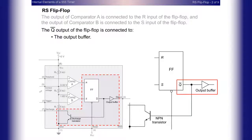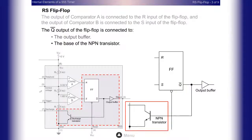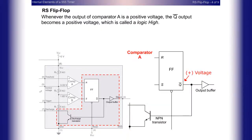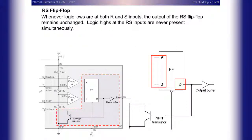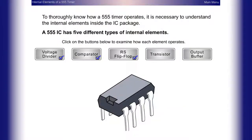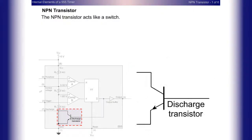The Q output of the flip-flop is connected to the output buffer and the base of the NPN transistor. Whenever the output of comparator A is a positive voltage, the Q output becomes a positive voltage, called a logic high. Whenever the output of comparator B is a positive voltage, the Q output becomes zero volts, called a logic low. Whenever logic lows are at both R and S inputs, the output of the RS flip-flop remains unchanged. Logic highs at both RS inputs are never present simultaneously.